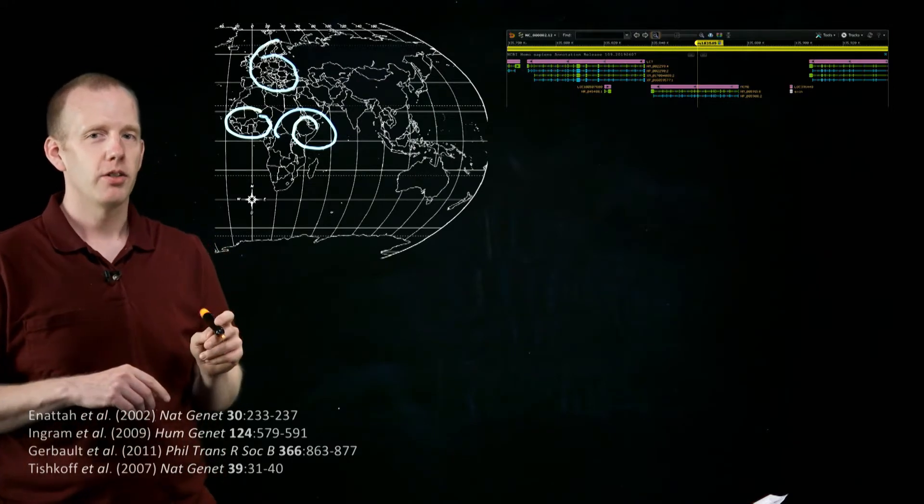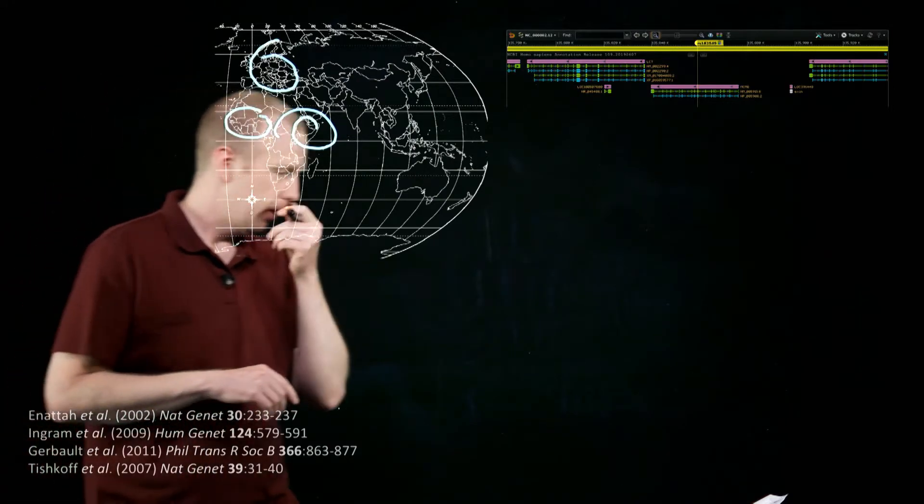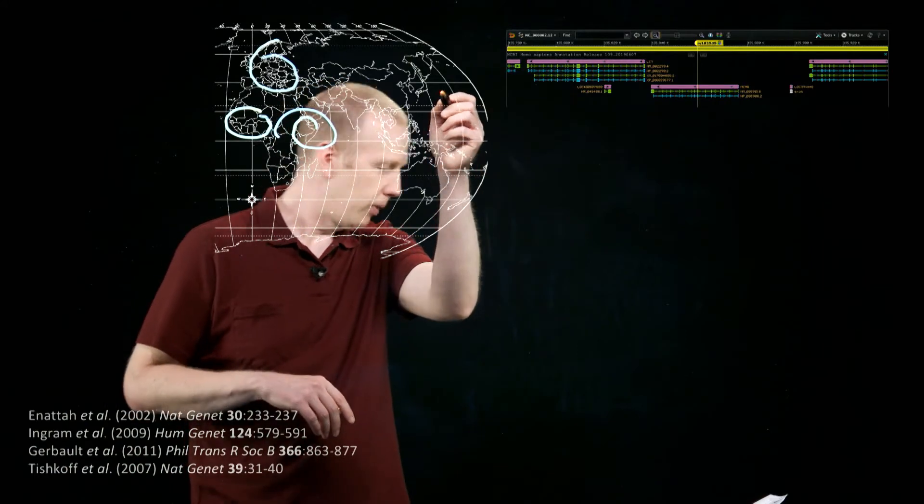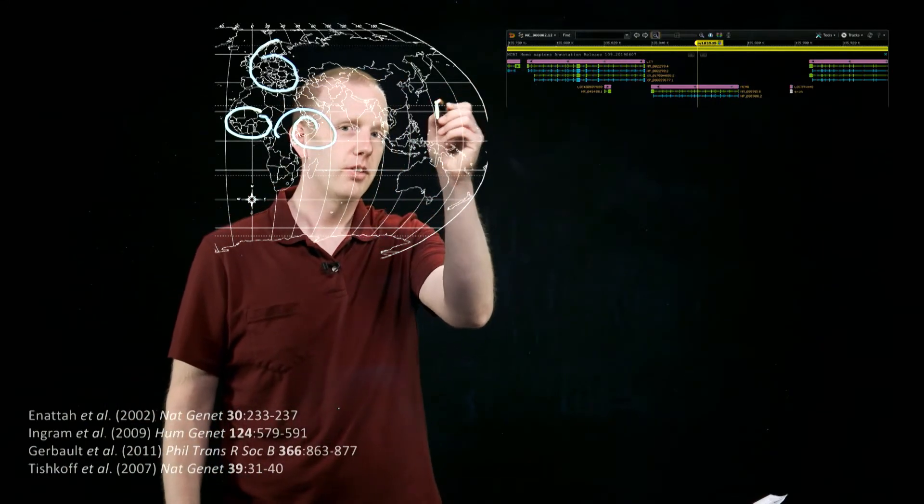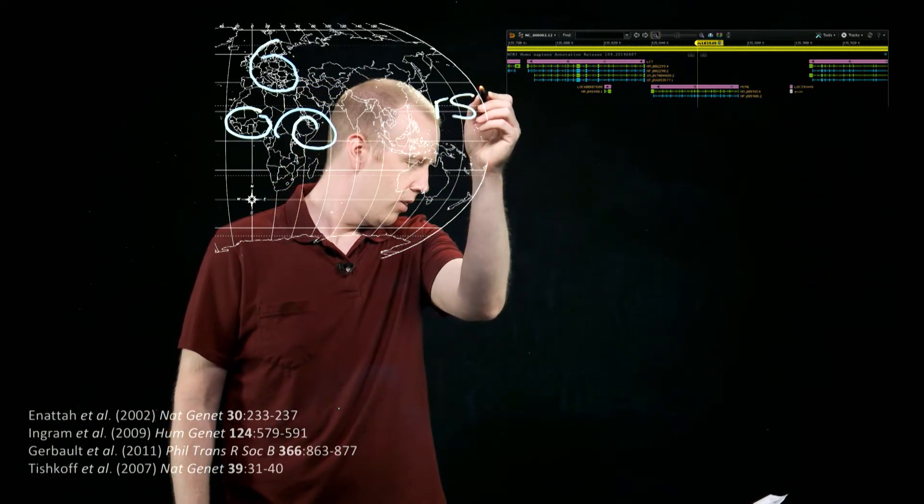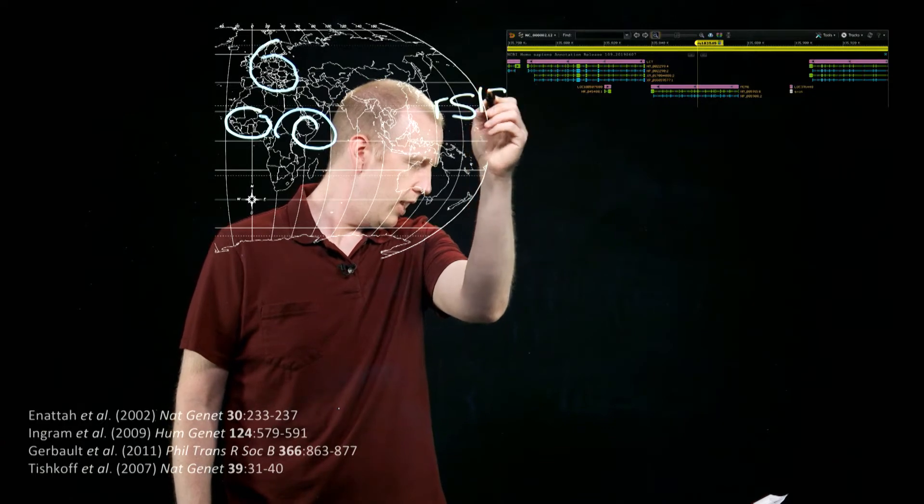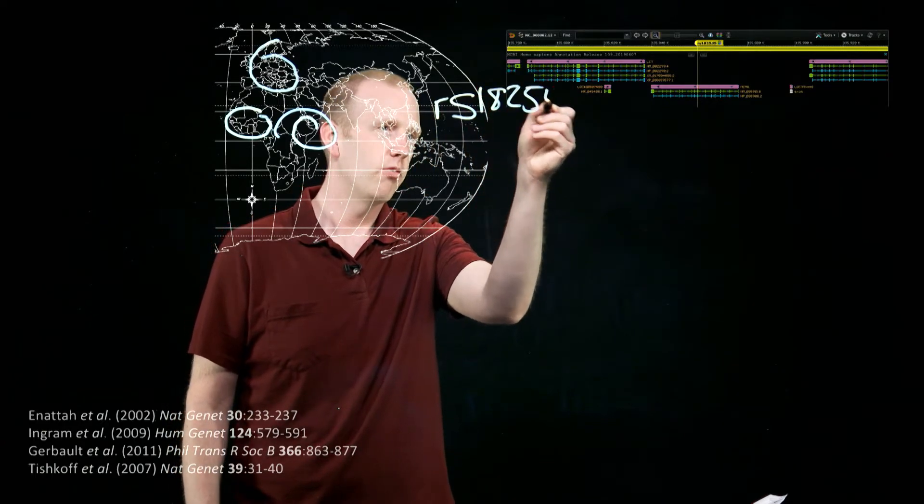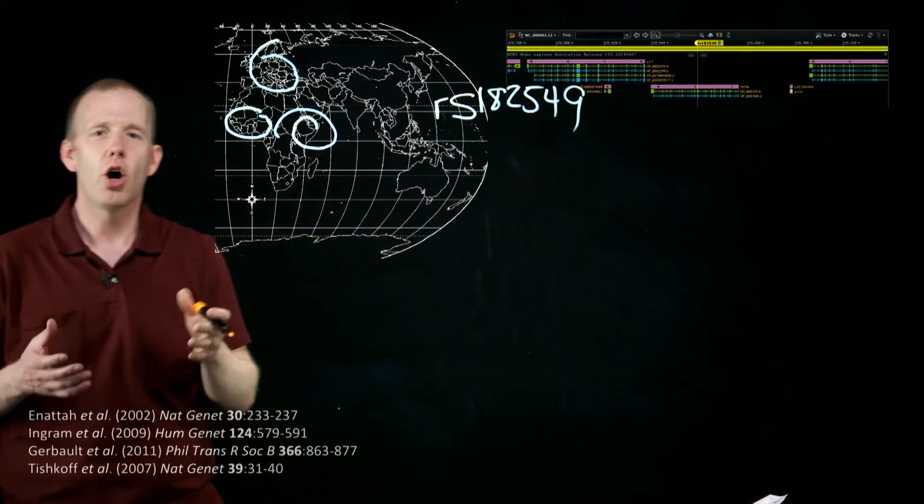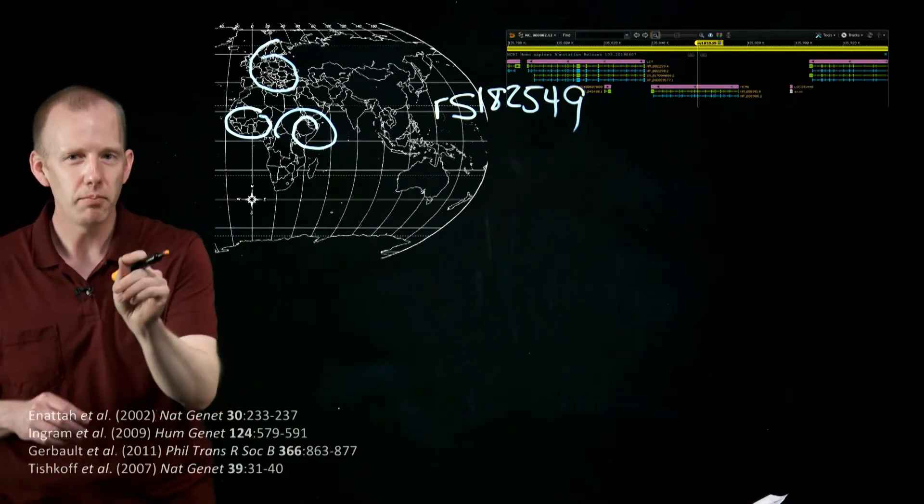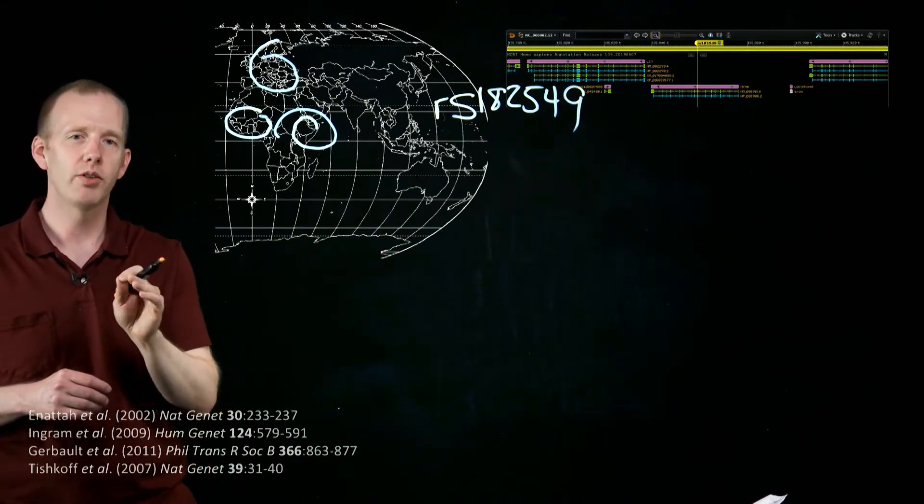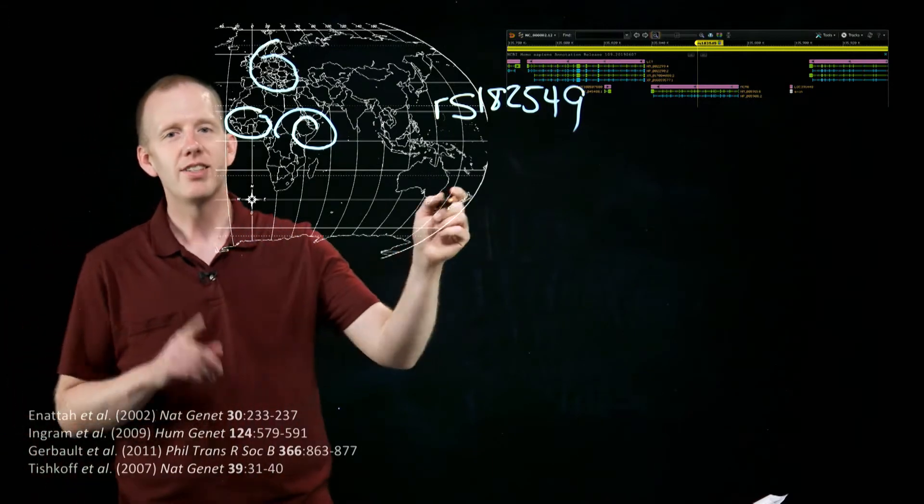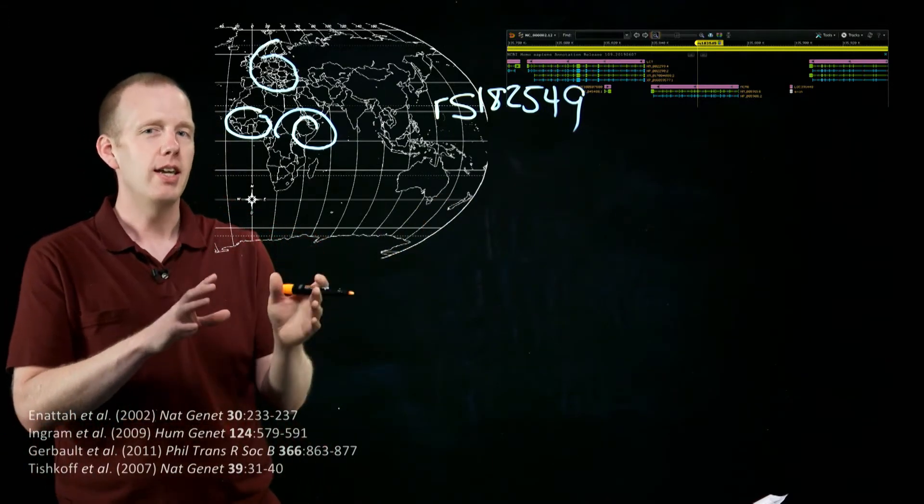In one of these populations, there's a mutation called, and you can't read it from there, it's called RS182549. It's just a code that geneticists give to one single nucleotide polymorphism, one SNP mutation.